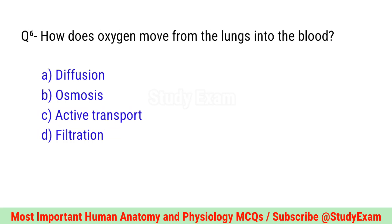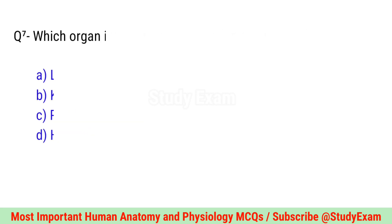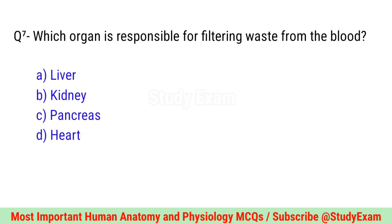Question number six. How does oxygen move from the lungs into the blood? Correct option is A. Diffusion.